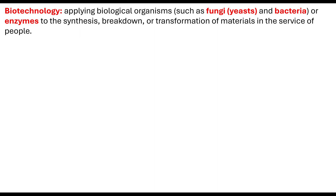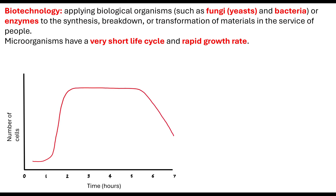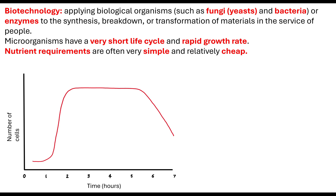So why do we use these microorganisms? Because we can take the number of cells of these microorganisms that have a very short life cycle and a rapid growth rate. If we're talking about prokaryotic organisms, we know they can reproduce and double every 20 to 30 minutes. We know they've got a rapid growth rate, so we can utilise that. The nutrients that they require are often very simple and also relatively cheap, which makes them good organisms to use.